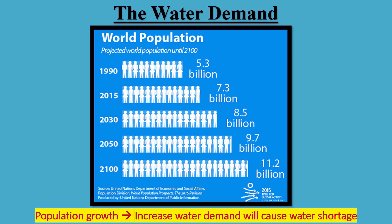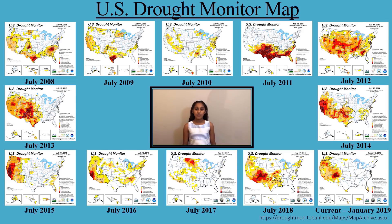How do we guarantee water in the future? Unfortunately, a single solution for a permanently secure water supply does not exist. Therefore, it is important that we use our water wisely and not waste it. Population growth is not the only reason why we need to use water wisely — drought conditions are also another reason.